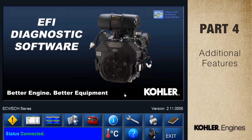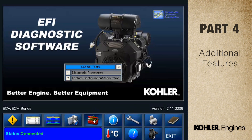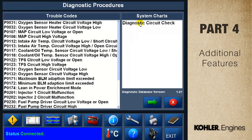The next function on the main control panel is the special test button. The special test menu displays the available tests or procedures. Here we see options for our example engine, the ECH ECV 630 to 749. The first option, diagnostic procedures, gives you an easy way to look up trouble code information or run the guided diagnostic procedures. This screen lets you select either the circuit check or a specific trouble code from the list.